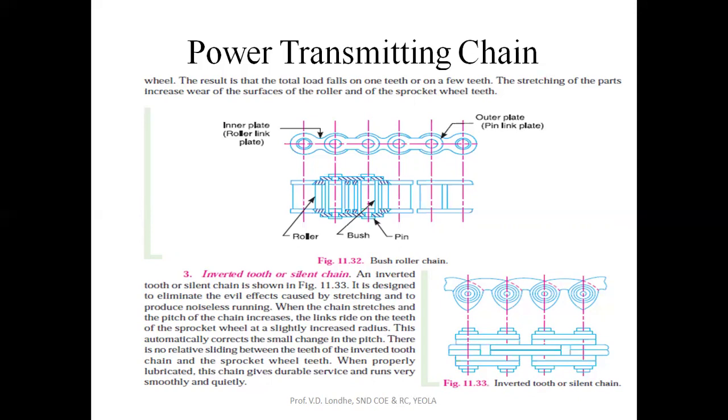The links ride on the tip of the sprocket, slightly increase and lose contact. Therefore, there is no easy motion within the teeth. The inverted tooth sprocket chain will remain constant and maintain continuity when properly lubricated, providing durable service and running smoothly and quietly.